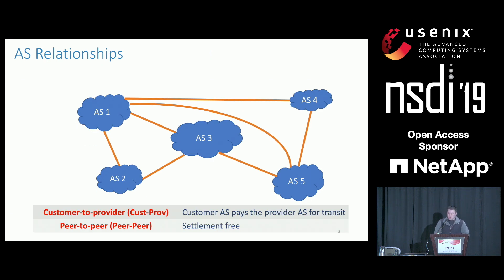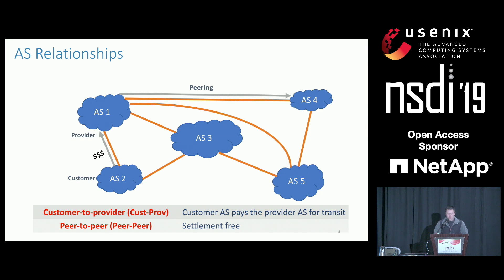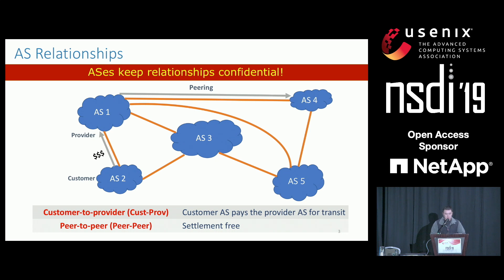The business relationship between ASes plays a crucial role when an AS decides to advertise and select routes. There are two prevalent forms of AS relationships: customer-to-provider and peer-to-peer. In a customer-to-provider relationship, the customer AS pays the provider AS for connectivity to other ASes, while in a peer-to-peer relationship, two ASes agree to exchange traffic without any payment. AS relationships are hard to know because most ASes don't want to share their peering contracts, so they often keep their business relationships confidential. So if we want to know the AS relationships, we have to infer them in some way.